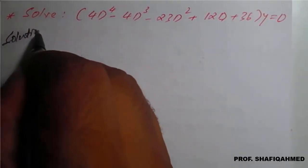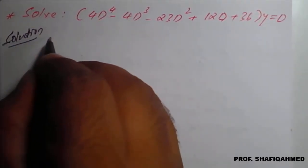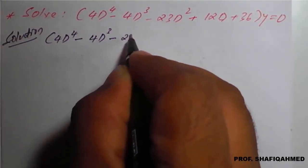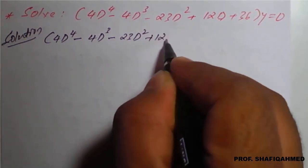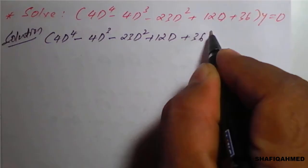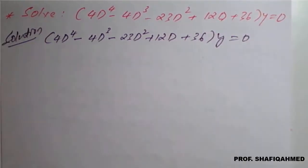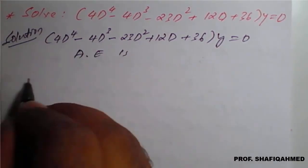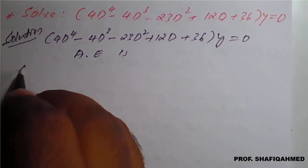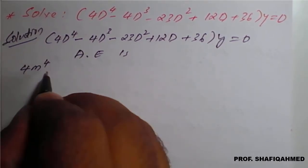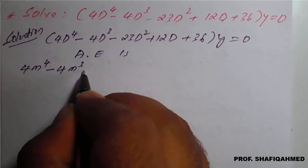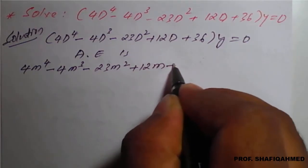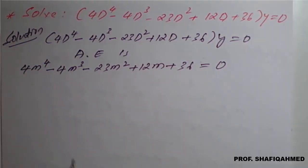Solution. I will rewrite once again: 4D raised to 4 minus 4D cubed minus 23D squared plus 12D plus 36 of y equals 0. Now, the auxiliary equation is — we will convert all D in terms of m. So: 4m raised to 4 minus 4m cubed minus 23m squared plus 12m plus 36 equals 0.